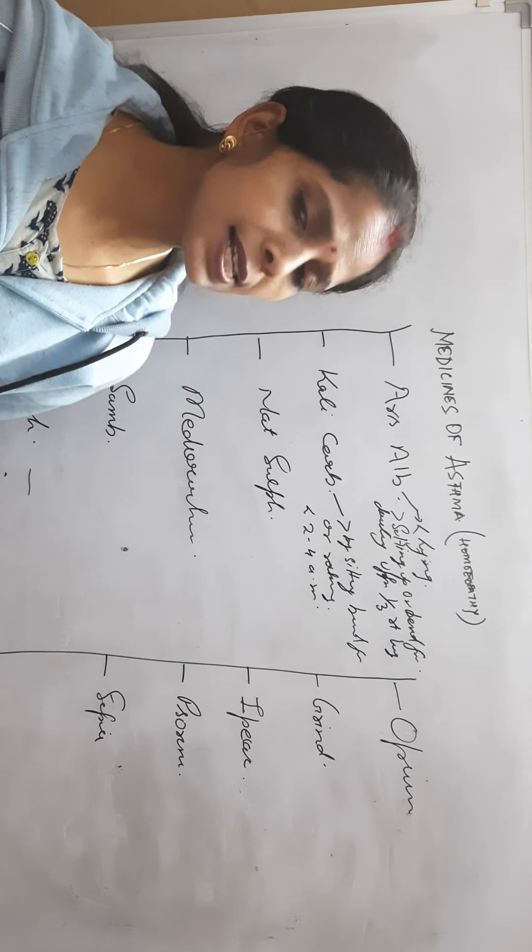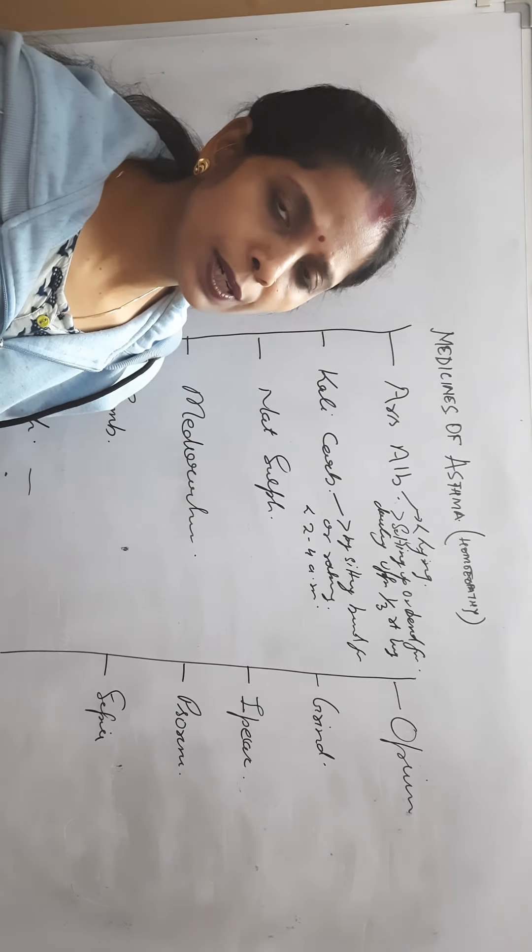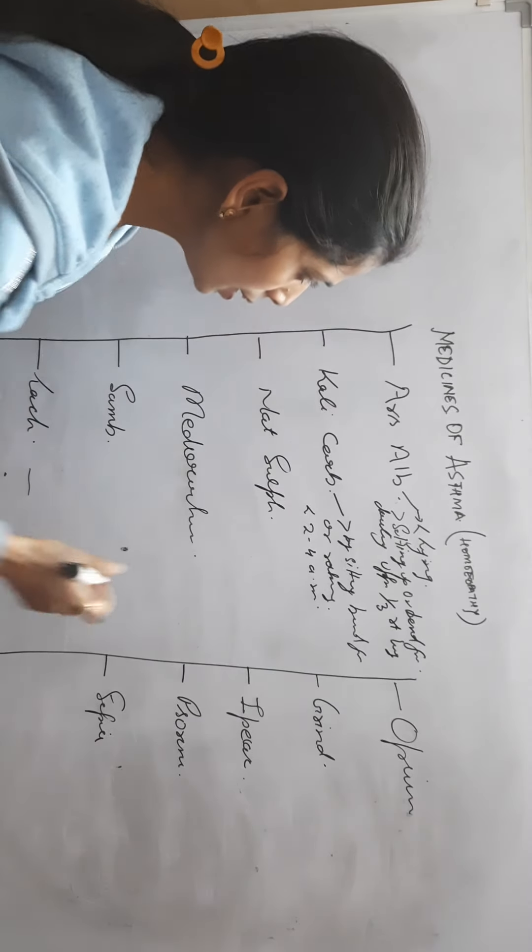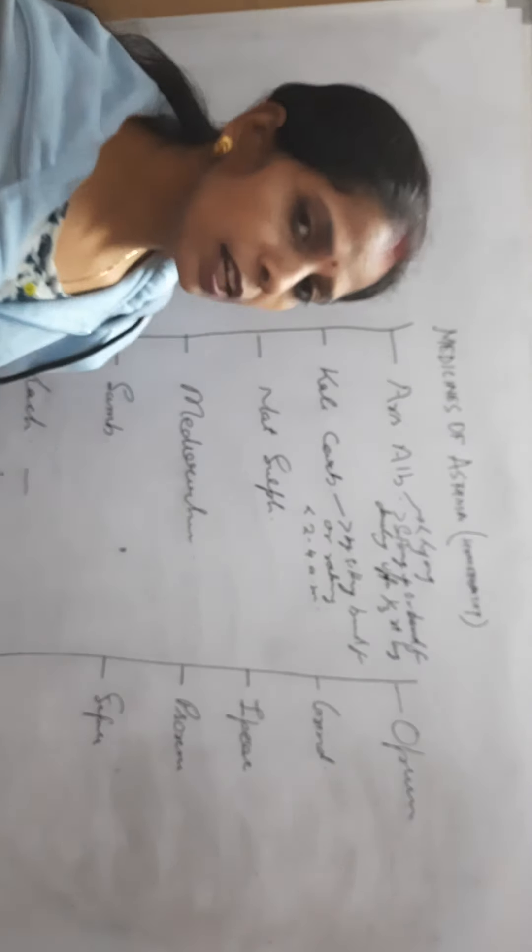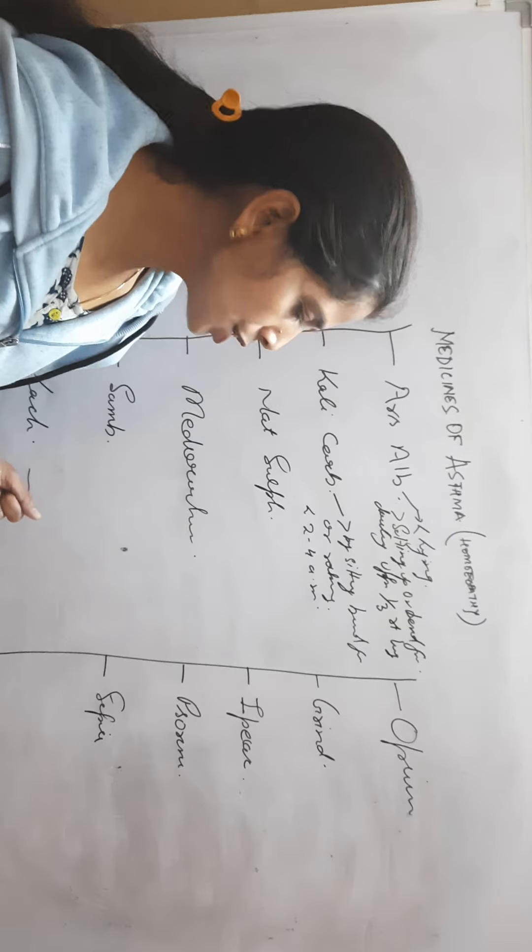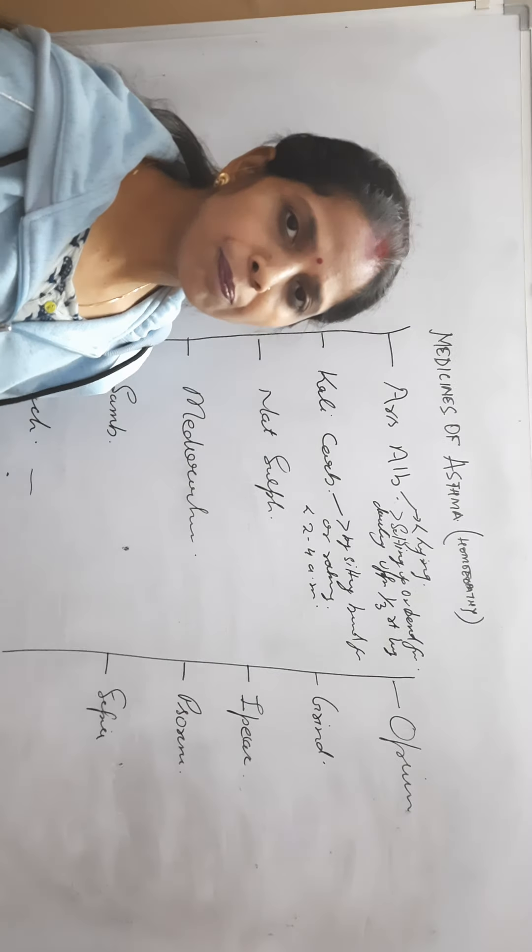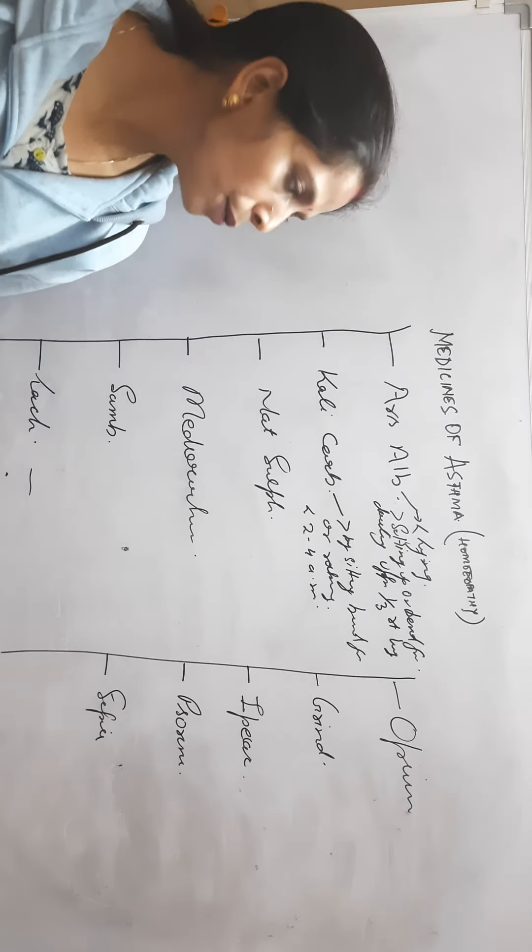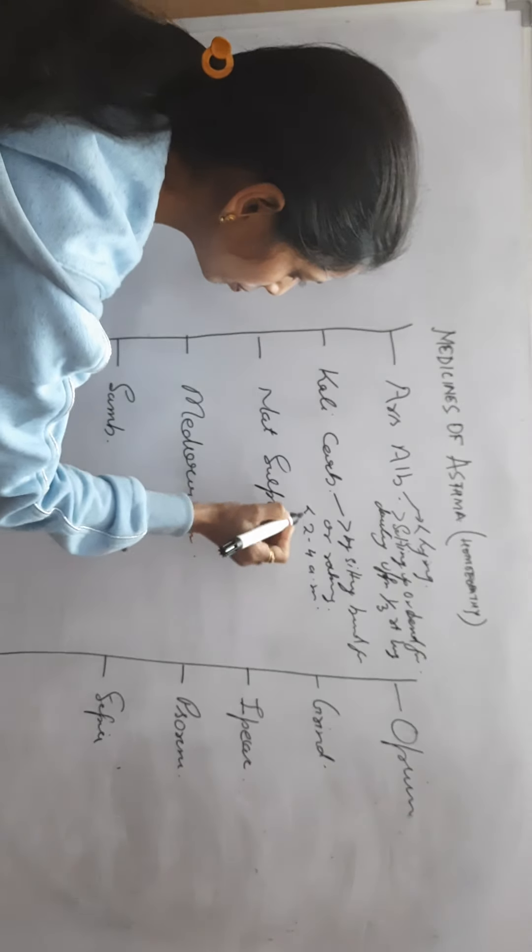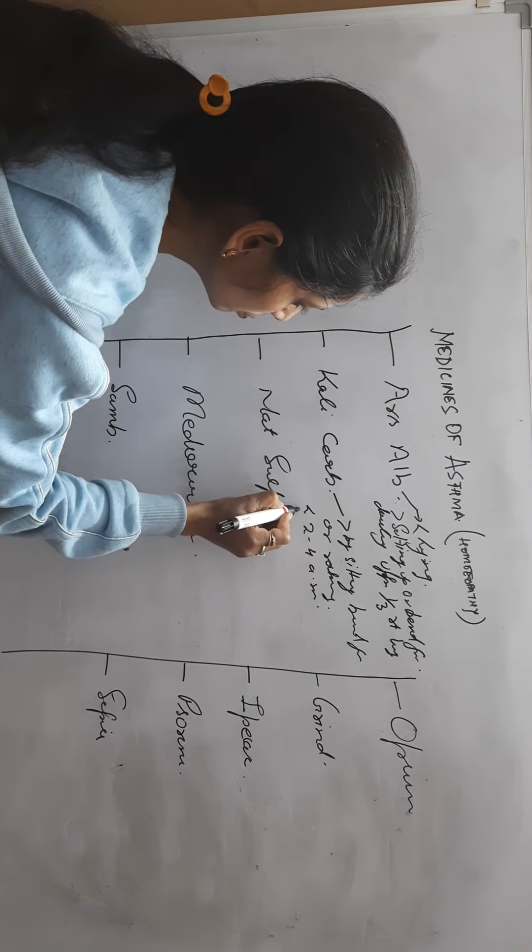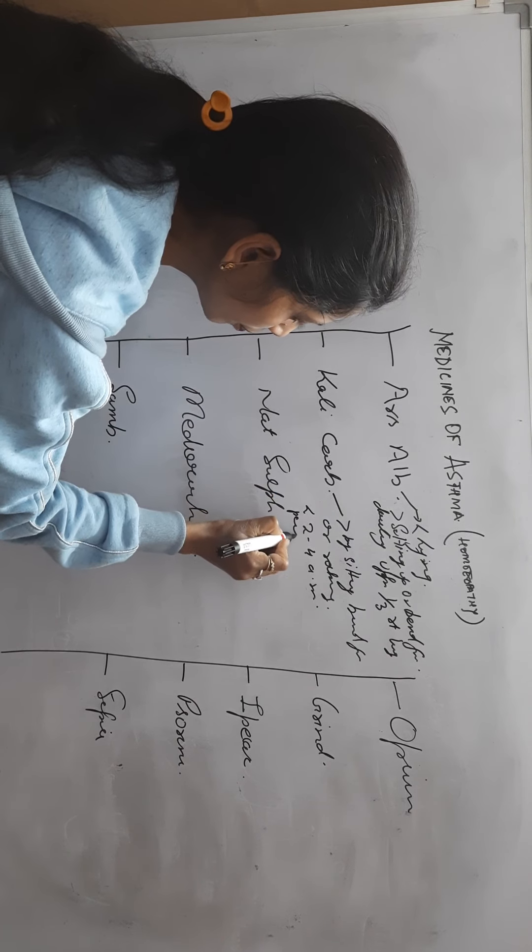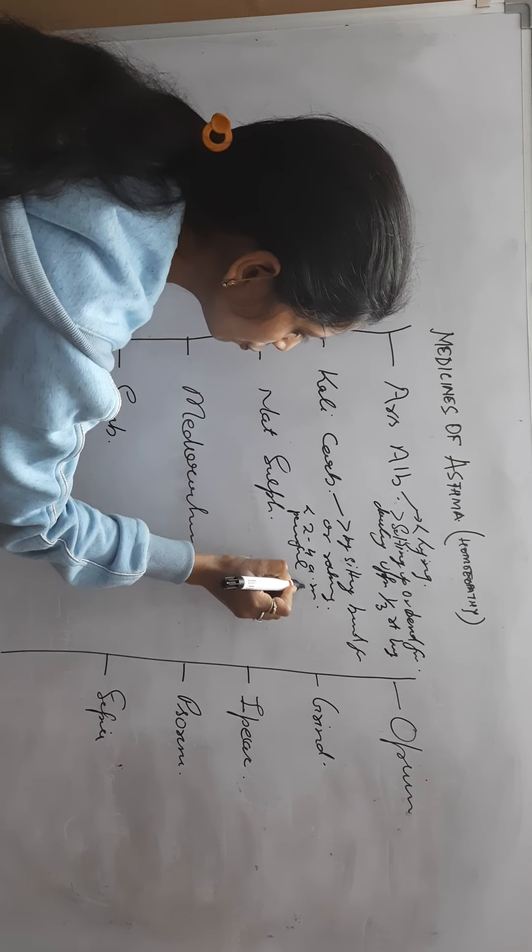Here pain is in right lower lung. Here upper one-third of right lung, here right lower lung. Patient is unable to lie on right side, or we can say patient is unable to lie on painful side.